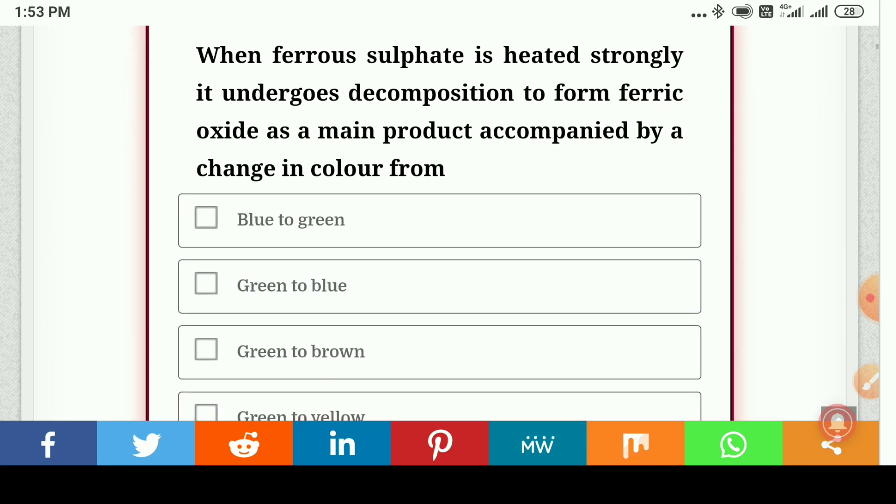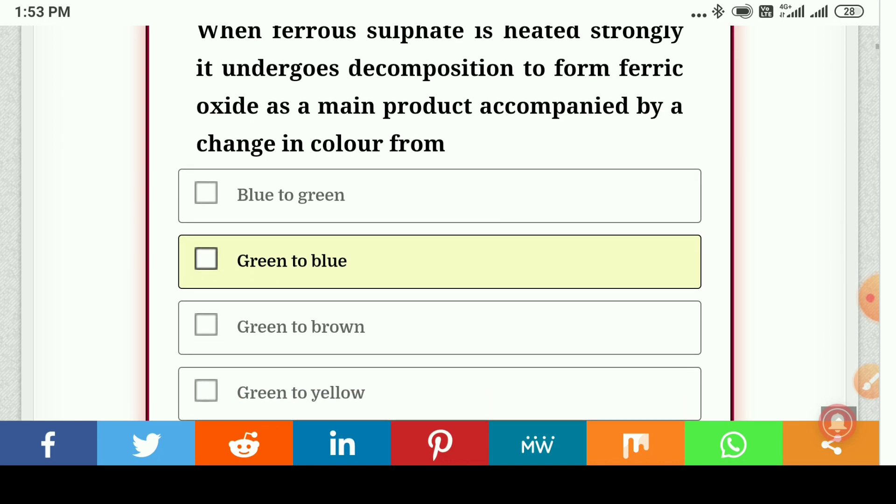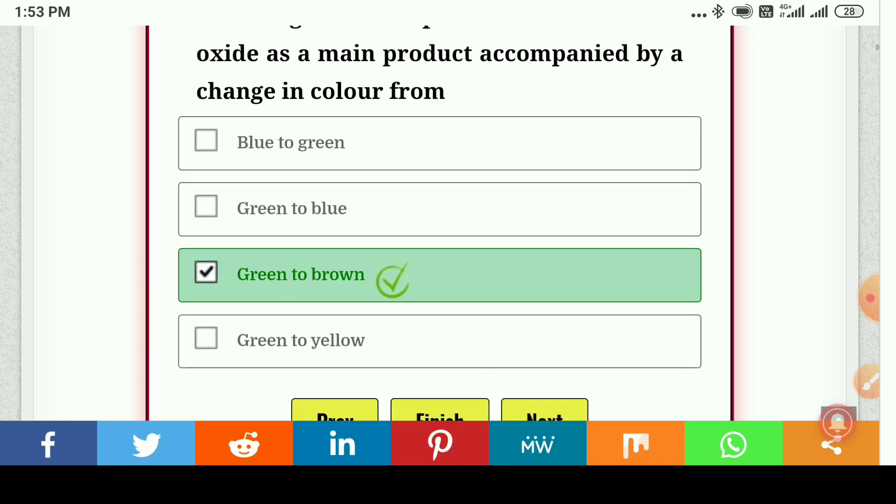When ferrous sulfate is heated strongly it undergoes decomposition to form ferric oxide as a main product accompanied by a change in color from green to brown.